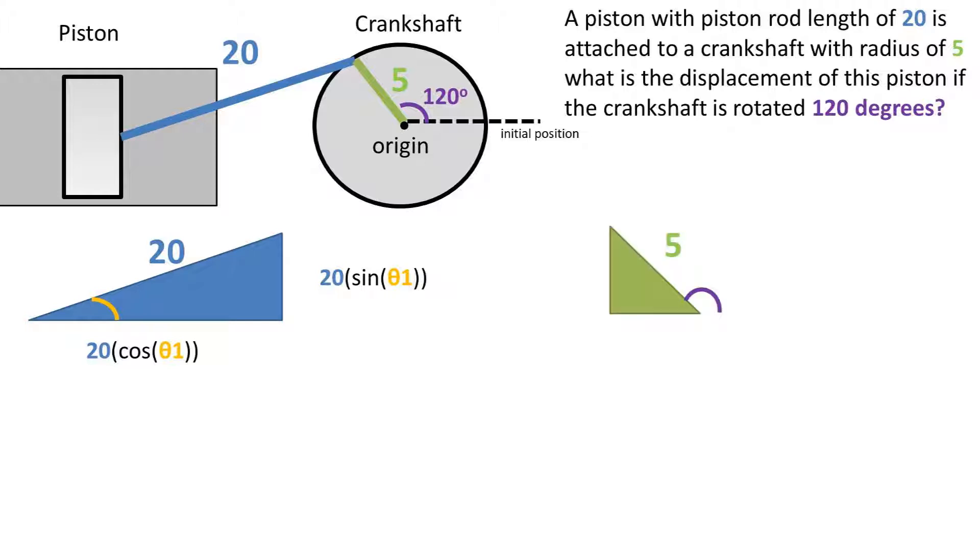We can make a second triangle for the crankshaft. We will set the angle from the initial position, so it will look like this. Recall the unit circle. This triangle has a side length adjacent to that angle of 5 times the cosine of that angle from the origin, and a height of 5 times the sine of that angle from the origin.